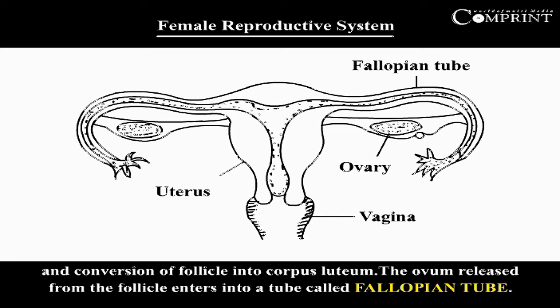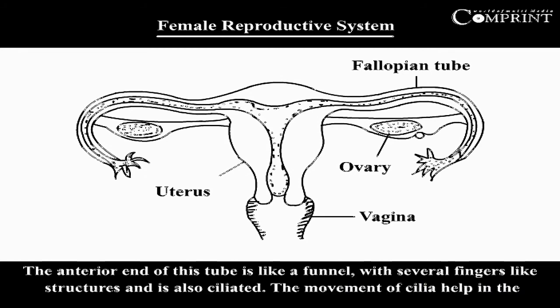The ovum released from the follicle enters into a tube called the fallopian tube. The anterior end of this tube is like a funnel with several finger-like structures and is also ciliated. The movement of cilia helps in the movement of the ovum through the fallopian tube into the uterus.